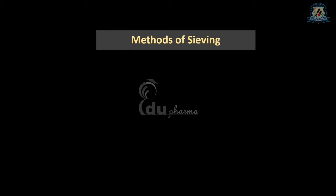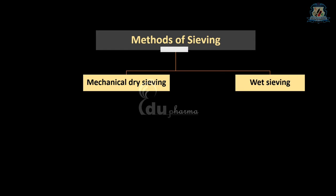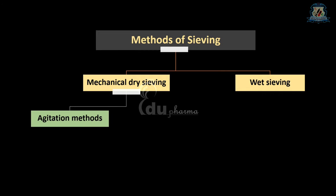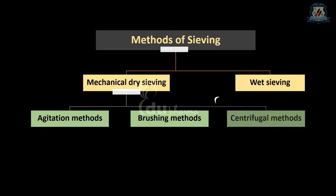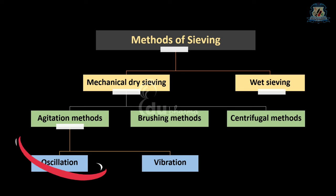Let's see about the different methods of sieving. Sieving methods may be broadly classified as the mechanical dry sieving method and the wet sieving method. Mechanical dry sieving devices are usually based on methods that agitate or brush the sieve, or use centrifugal force. In agitation methods, sieves may be agitated in a number of different ways such as oscillation, vibration, and gyration.